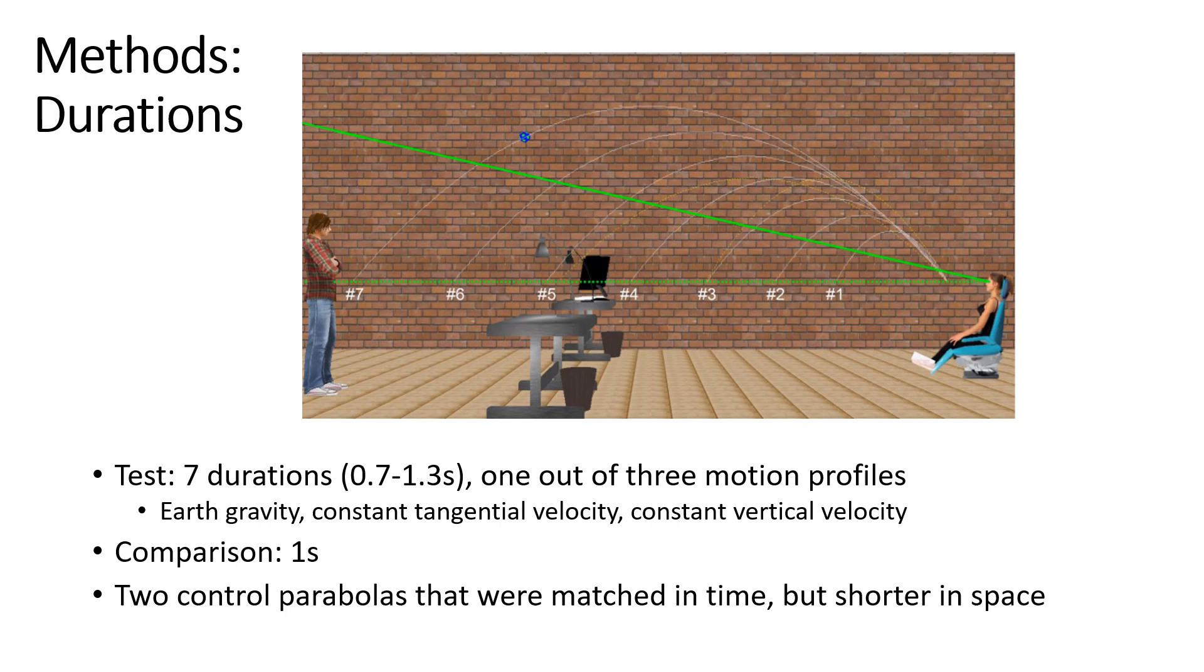We used seven test trajectories that had durations between 0.7 and 1.3 seconds and one out of three motion profiles. One was earth gravity, one was a motion profile where we kept the tangential velocity constant and one where we kept the vertical velocity constant. I will show that a bit better in the next slide. The comparison parabola was always governed by earth gravity and it was always one second long. You can see these parabolas here in the picture.